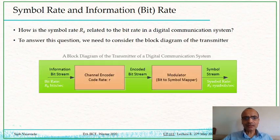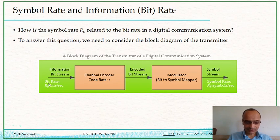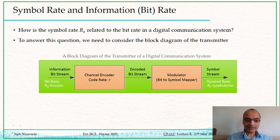That relationship is found by looking at the complete diagram, which includes not only the modulation but also the encoder. We assume that the bits per second incoming are at the output of the source encoder. So in this diagram we have not considered source encoding or data compression — RB bits per second is assumed to be the data rate at the output of the source compressor.